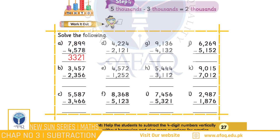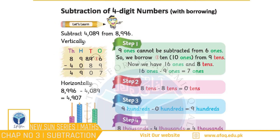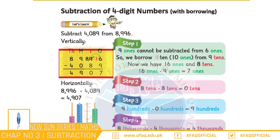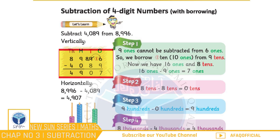Bacchiyon, iske baad hum Page 28 par 4-digit numbers ko 4-digit numbers mein se borrow karte hue subtract karna seekhenge. Jiske liye hum yahan diye gaye example par nazar dalenge jismein aap dekh sakte hain ki 8,996 mein se 4,089 ko subtract kiya jaana hai. Jiske liye hamein 1s place par maujood values ko pehle subtract karna hoga, yani 6 minus 9.